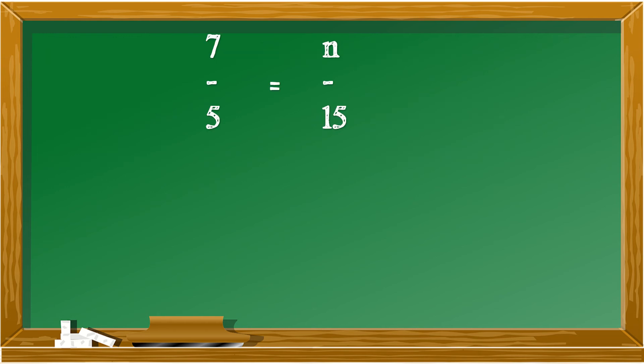Let us solve for this kind of proportion. Again, we will do the cross multiplication. 7 times 15 is 105. 5 times N is 5N. Divide both by 5, and cancel out those two 5s that will leave letter N alone. 105 divided by 5 is 21.